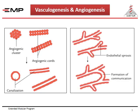Angiogenesis is the formation of new blood vessels. The existing endothelial tubes give rise to sprouts or buds, and some of these become anastomotic with each other to form communications. In the case of arteries, these communications are called anastomoses.